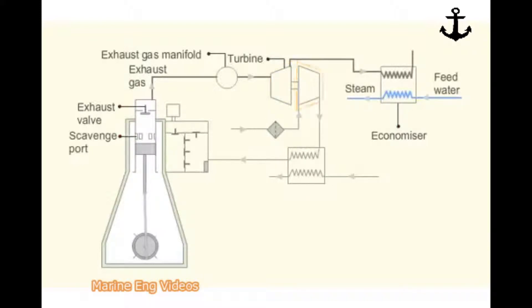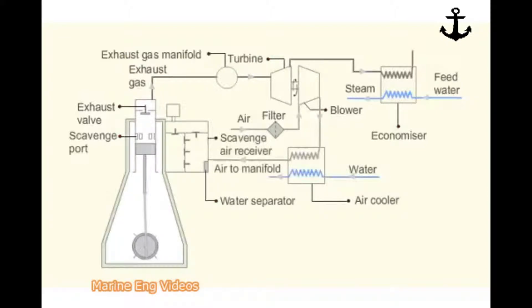The turbine is connected to a centrifugal blower. The rotation of the turbine rotates the blower. The blower rotation causes air from the engine room to pass through an air filter, cooler, water separator and deliver to the scavenge air receiver.